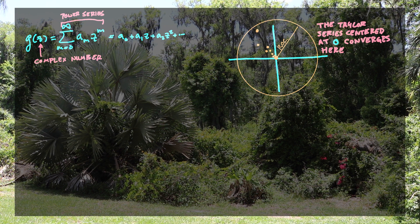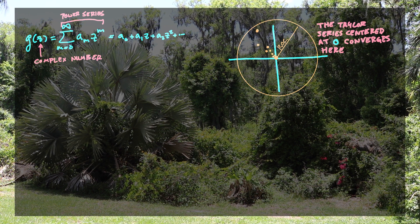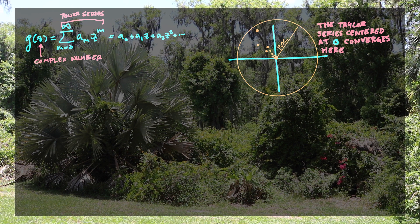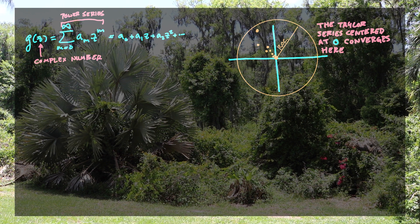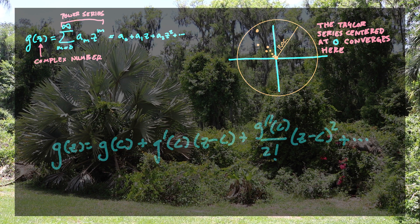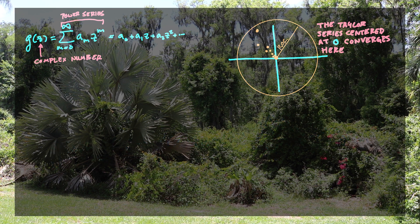Without loss of generality, we're going to assume that the center of the disk is where that accumulation point is, and we're going to assume that center is zero — it just makes things easier to write. If we wanted to run the same argument, all we'd really have to do is do a Taylor expansion at another point inside of the disk, and the rest of the argument would hold just the same.